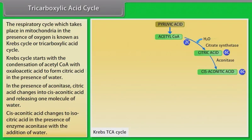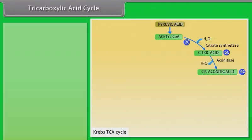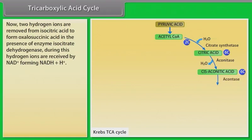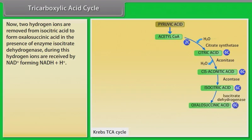Cis-aconitate changes to isocitric acid in the presence of enzyme aconitase with the addition of water. Two hydrogen ions are removed from isocitric acid to form oxalosuccinic acid in the presence of enzyme isocitrate dehydrogenase, and the hydrogen ions are received by NAD⁺, forming NADH+H⁺.